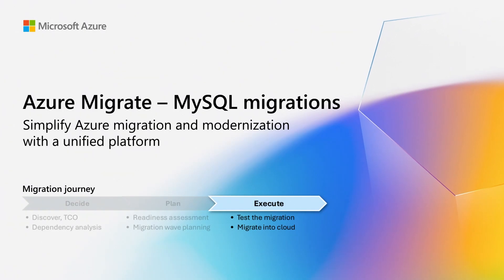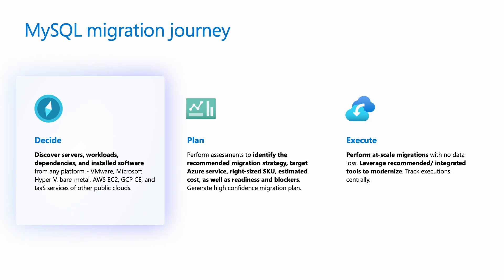If you have watched the previous videos in the series, you already know that a typical migration journey is divided into three stages: decide, plan, and execute. For a MySQL migration, you'll start by using Azure Migrate to first discover MySQL database instances in your environment along with their attributes. From there, you can obtain a high-confidence migration plan with the instance's readiness to migrate to Azure Database for MySQL, the fully managed database-as-a-service or PaaS offering on Azure, along with SKU recommendations and associated costs. Check out the previous videos in the series that delve deeper into these two stages.